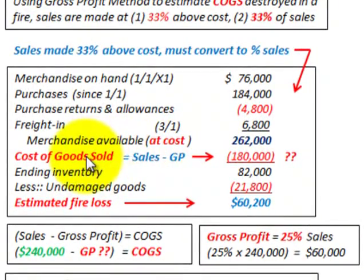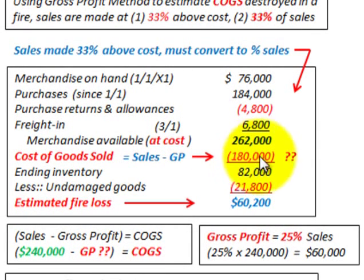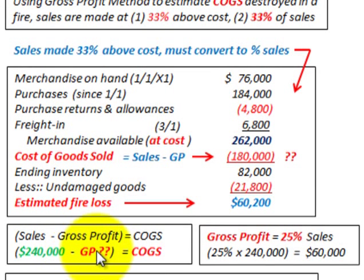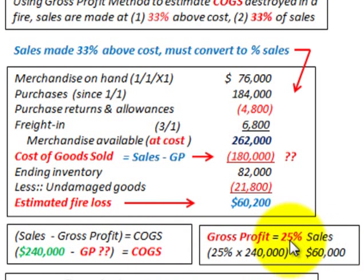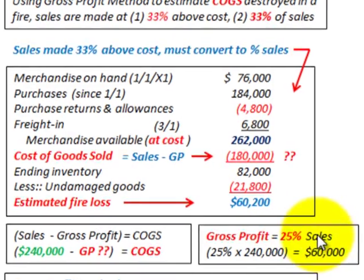We have to determine cost of goods sold, which is sales minus gross profit, and we're going to determine that to be $180,000. Our sales are $240,000, but we don't know our gross profit when looking at 33% above cost. So we have to convert this 33% of cost to the percent of sales, and we'll determine that it's 25% of our sales.